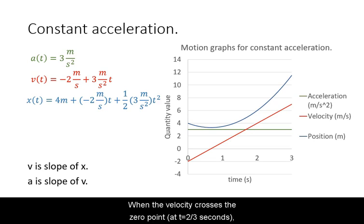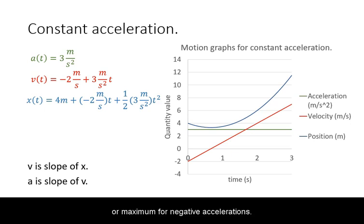When the velocity crosses the zero point, that is when the position graph will be at minimum for positive accelerations or maximum for negative accelerations.